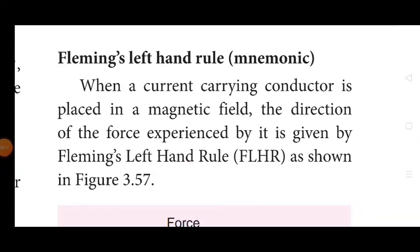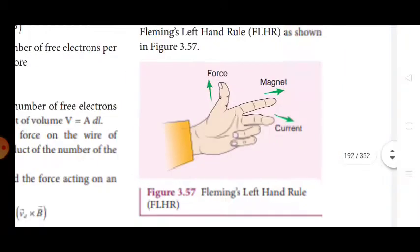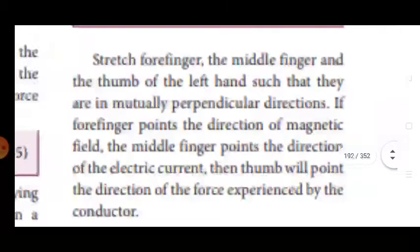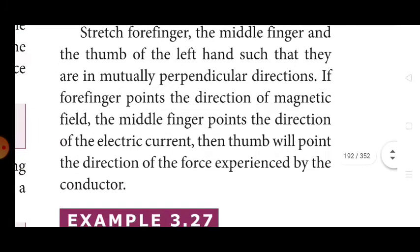Fleming's left-hand rule: when a current carrying conductor is placed in a magnetic field, the direction of the force experienced by it is given by Fleming's left-hand rule. Force is shown by the thumb, magnetic field by the four fingers, and current by the middle finger. Stretch the four fingers, middle finger, and thumb of the left hand such that they are mutually perpendicular. If the four fingers point the direction of magnetic field and the middle finger points the direction of current, then the thumb will point the direction of force on the conductor.